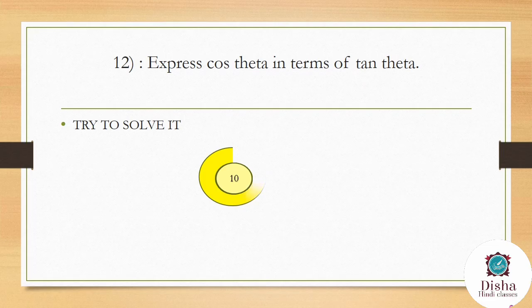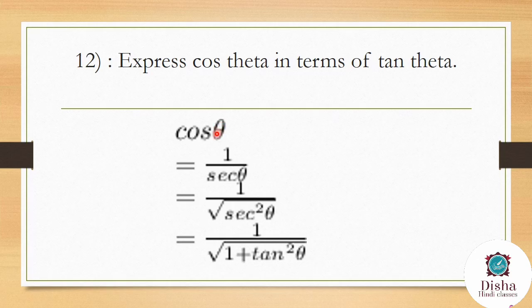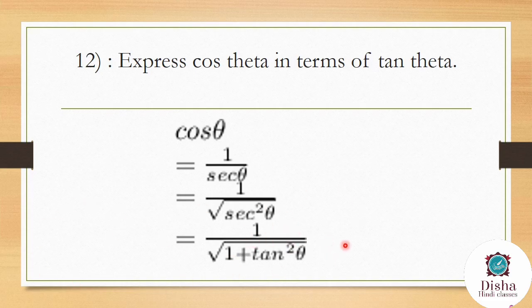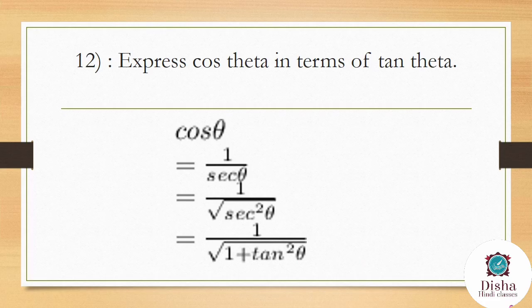Express cos θ in terms of tan θ. Write cos θ = 1/sec θ = 1/√(sec²θ). Using the identity sec²θ = 1 + tan²θ, we substitute to get cos θ = 1/√(1 + tan²θ). This is the value of cos θ expressed in terms of tan θ.